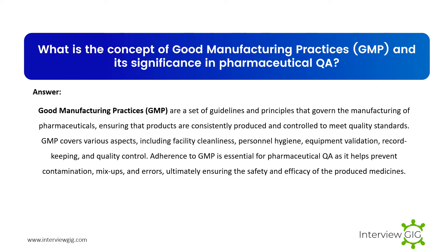What is the concept of good manufacturing practices (GMP) and its significance in pharmaceutical QA? Good manufacturing practices (GMP) are a set of guidelines and principles that govern the manufacturing of pharmaceuticals, ensuring that products are consistently produced and controlled to meet quality standards. GMP covers various aspects including facility cleanliness, personnel hygiene, equipment validation, record-keeping, and quality control. Adherence to GMP is essential for pharmaceutical QA as it helps prevent contamination, mix-ups, and errors, ultimately ensuring the safety and efficacy of the produced medicines.